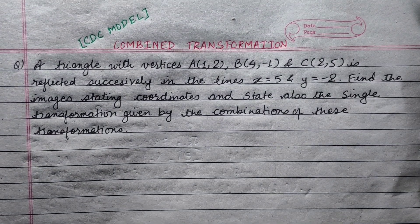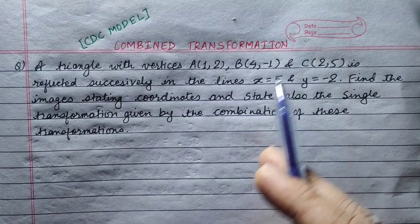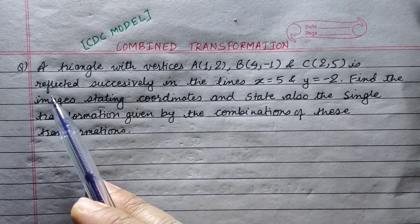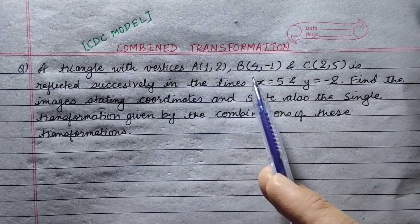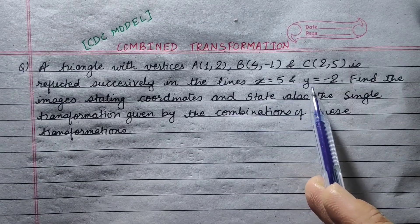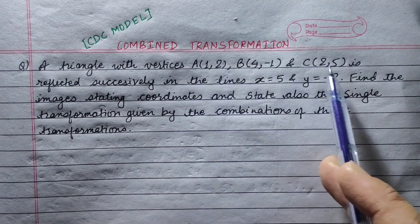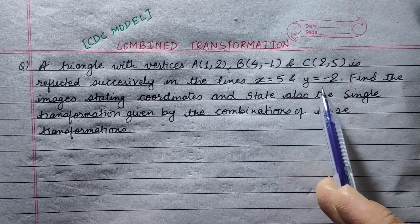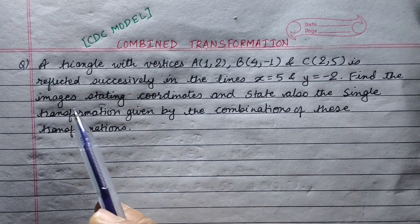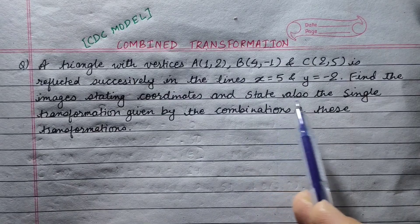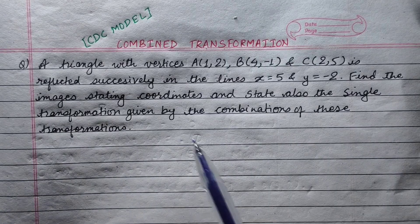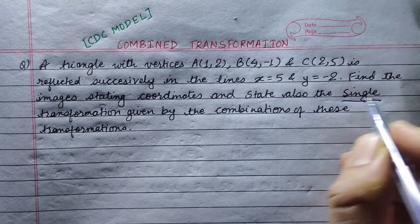Hi everyone. I am going to work through a combined transformation question. This is a CDC model set. A triangle with vertices A(1,2), B(4,-1), and C(2,5) is reflected successively in the lines x equals 5 and y equals minus 2. Find the image coordinates, and also state the single transformation given by the combination of these two transformations.